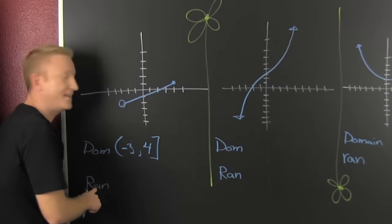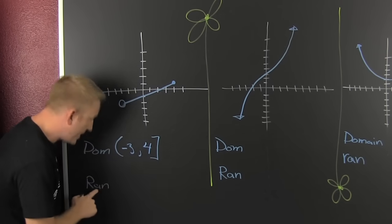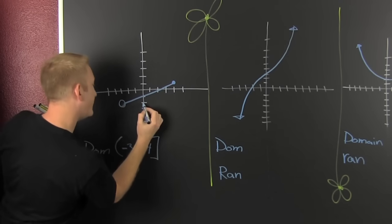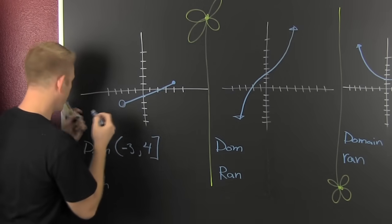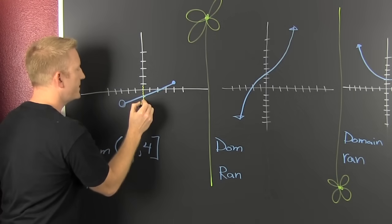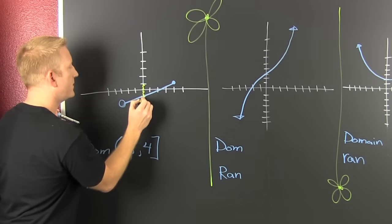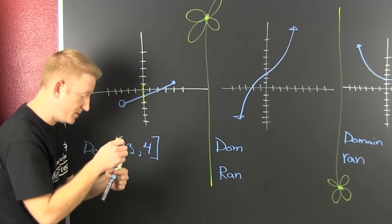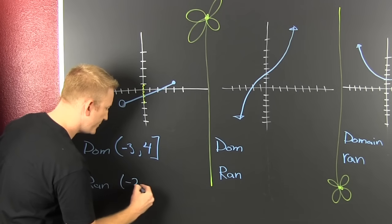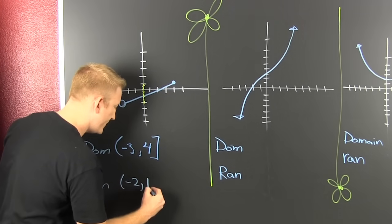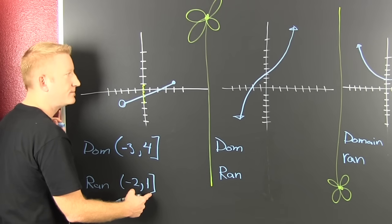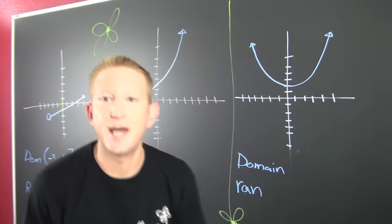The range is the set of all y values. Looking at the graph, the range goes from minus 2 to 1. It's open on the minus 2 side and closed on the 1 side, so we write it as the interval from minus 2 to 1, open on the left and closed on the right.